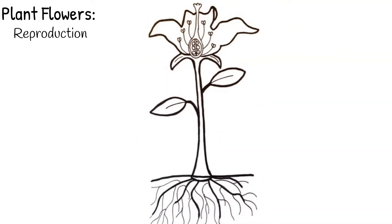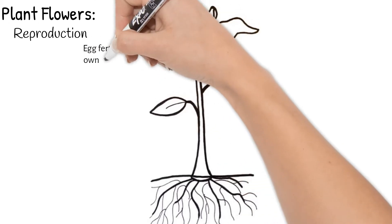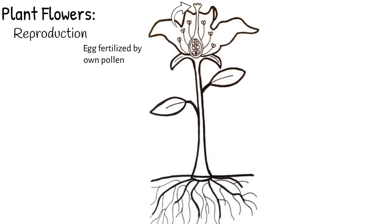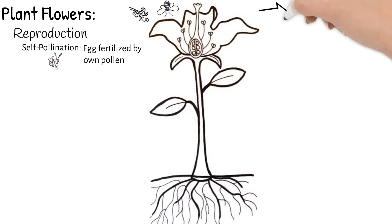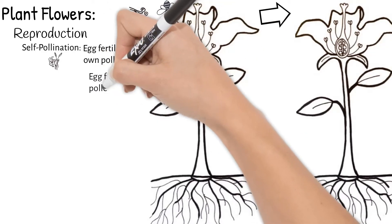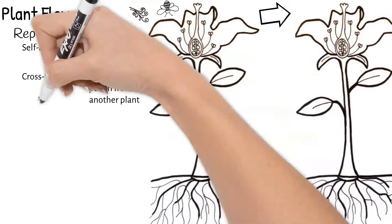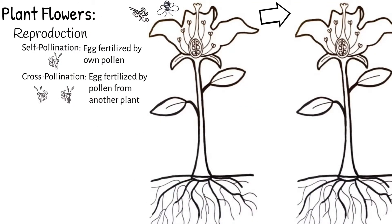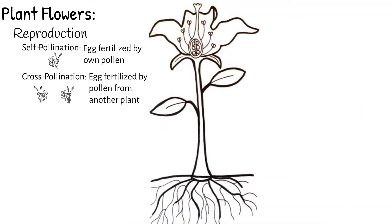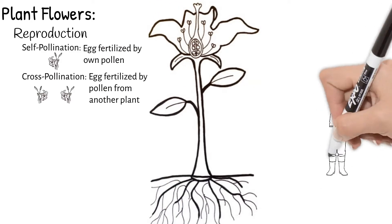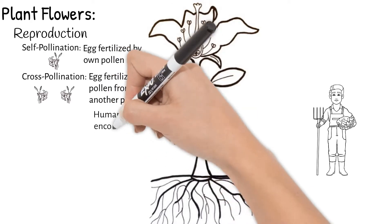Because flowers have both a pistil and several stamen, pollen from the flower can fertilize its own eggs — this is called self-pollination. If pollen is carried by insects or wind to a different flower, this is called cross-pollination. The pollen will only be able to fertilize a plant of its same species.